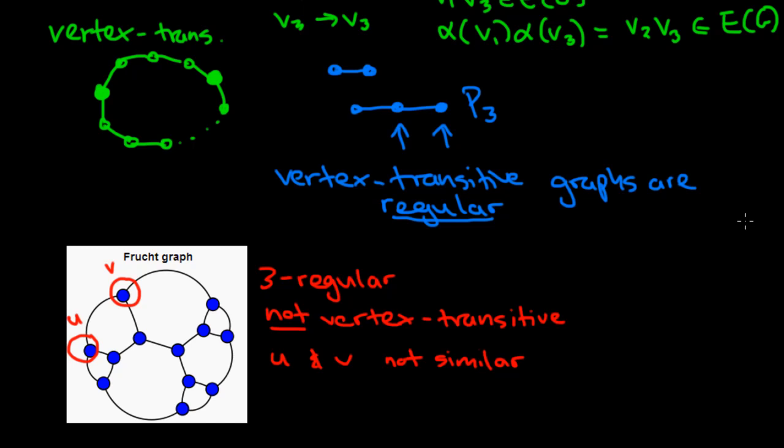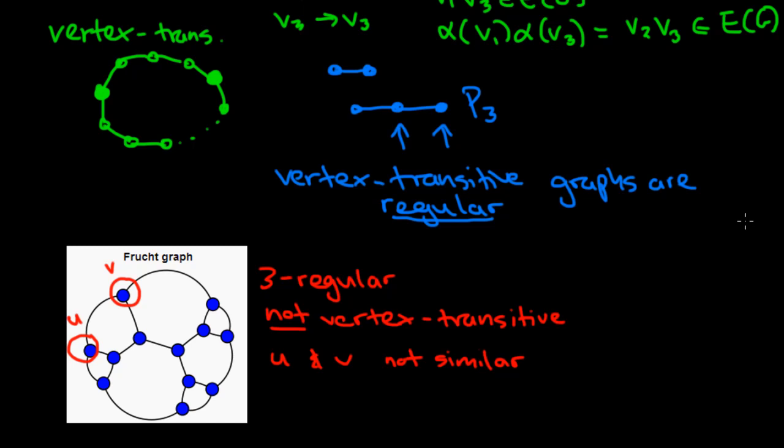So in looking at vertex transitive graphs, we expect to find Hamilton paths. Of course, we don't know that this is true. Let's go back up to the conjecture. This was conjectured in 1970, that every finite connected vertex transitive graph has a Hamilton path. Keep in mind, we're only looking for paths. Nobody has yet found an example of a finite connected vertex transitive graph with no Hamilton path. But nobody's been able to show that it will always work. So this is still open in general. In the next video, I'll start talking about what is conjectured and what is known about Hamilton cycles in graphs.